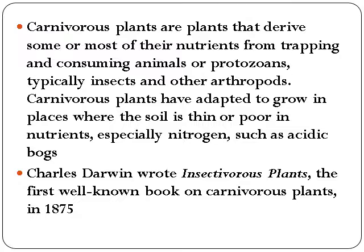Now let's see what are carnivorous plants. Carnivorous plants are plants that derive some or most of their nutrients from trapping and consuming animals or protozoans, typically insects and other arthropods. Carnivorous plants have adapted to grow in places where the soil is thin or poor in nutrients, specially nitrogen, such as acidic bogs.